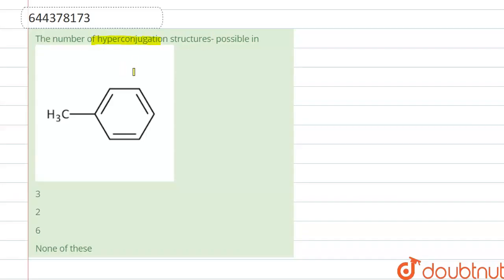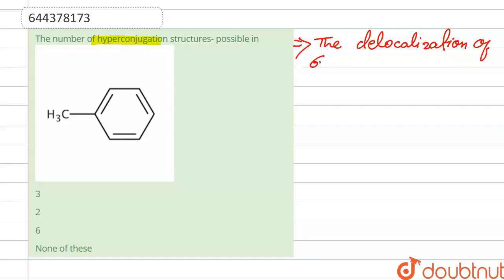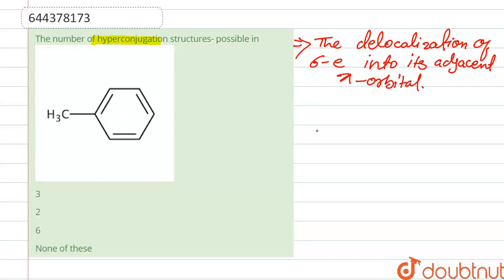The question is: find the number of hyperconjugation structures possible for toluene. First, let's understand what hyperconjugation is. The delocalization of sigma electrons into an adjacent pi bond or pi orbital is known as hyperconjugation. We will apply this to toluene.